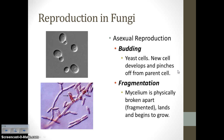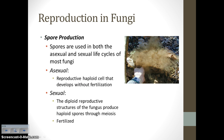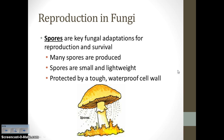Fungi can reproduce asexually or sexually. Asexual reproduction methods include budding, where a new cell develops and pinches off from the parent cell, and fragmentation, where mycelium breaks off and begins to grow in a new location. Spores are unique because they can be used for asexual or sexual reproduction. In asexual reproduction, a spore develops without fertilization into a new fungus. In sexual reproduction, spores are haploid, produced through meiosis, and must be fertilized. Spores are a key fungal adaptation — they're produced in great numbers, are small and lightweight for easy travel, and protected by a tough waterproof cell wall.